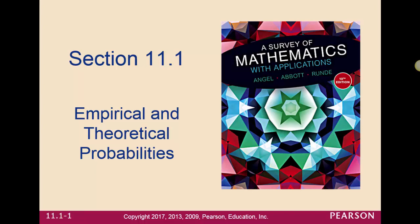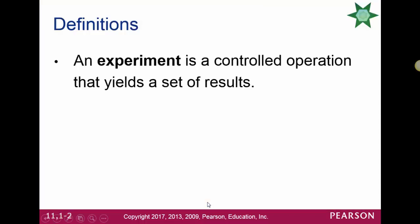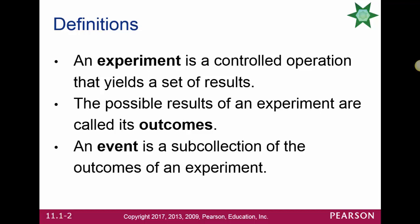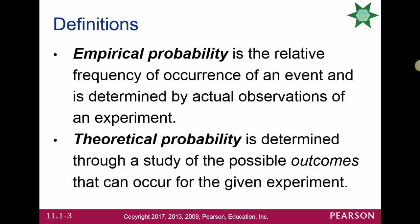This section begins Unit 4 in our course, starting with Probability: Empirical and Theoretical Probabilities. An experiment is a controlled operation that yields a set of results, and the possible results are called outcomes. An event is a sub-collection of the outcomes of an experiment. Empirical probability is the relative frequency of occurrence of an event, determined by actually observing the experiment. Theoretical probability is determined through a study of the possible outcomes that can occur.